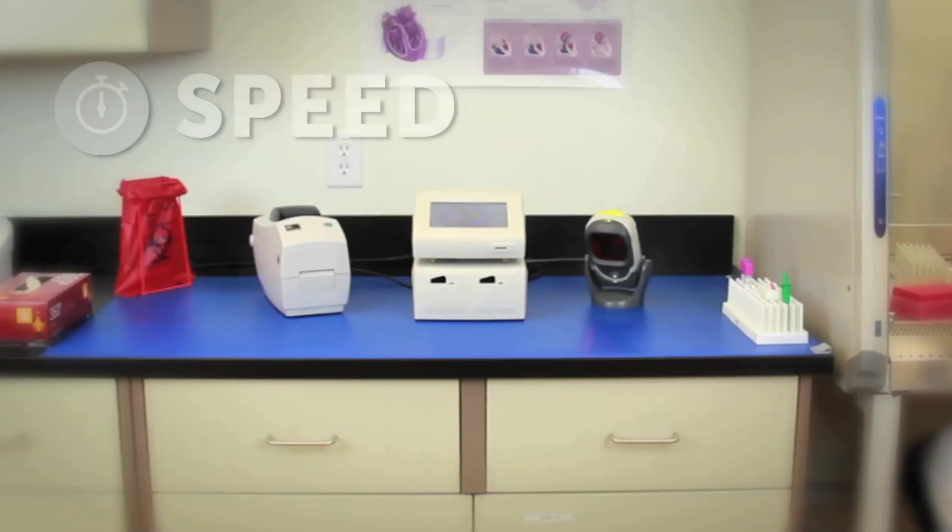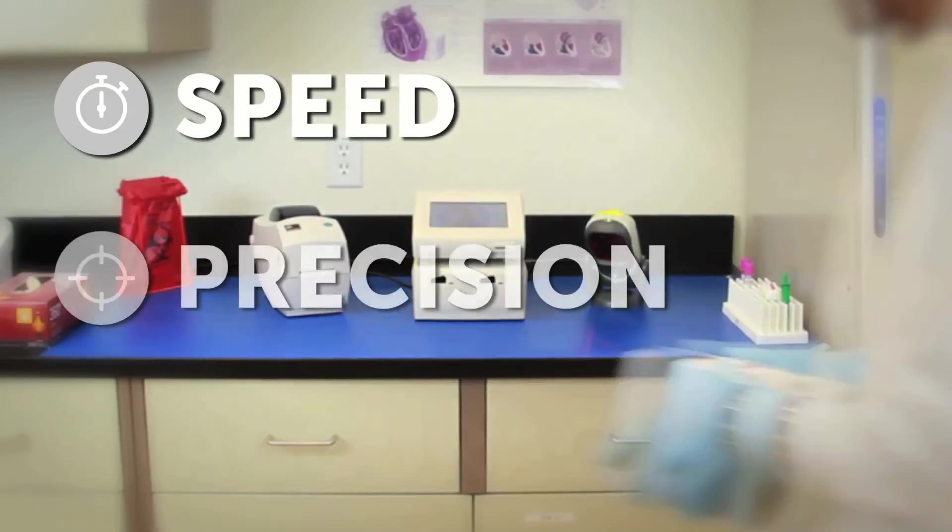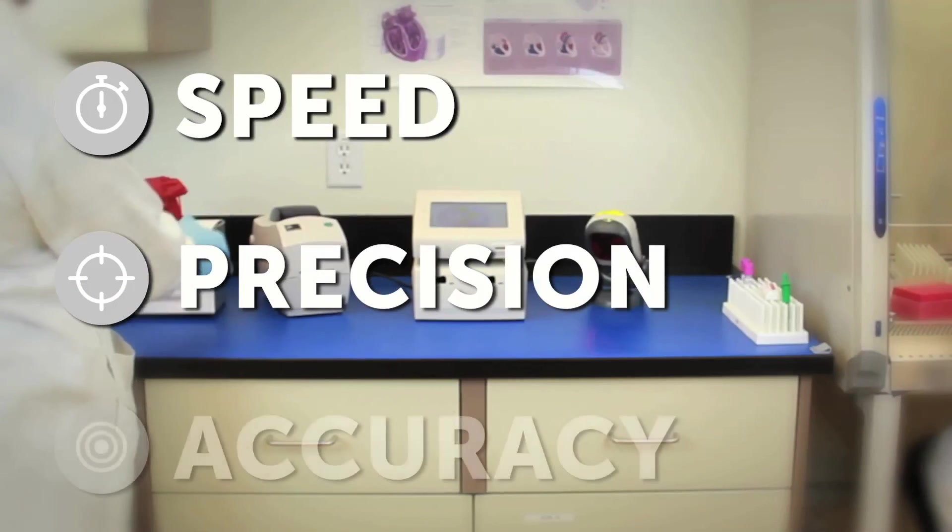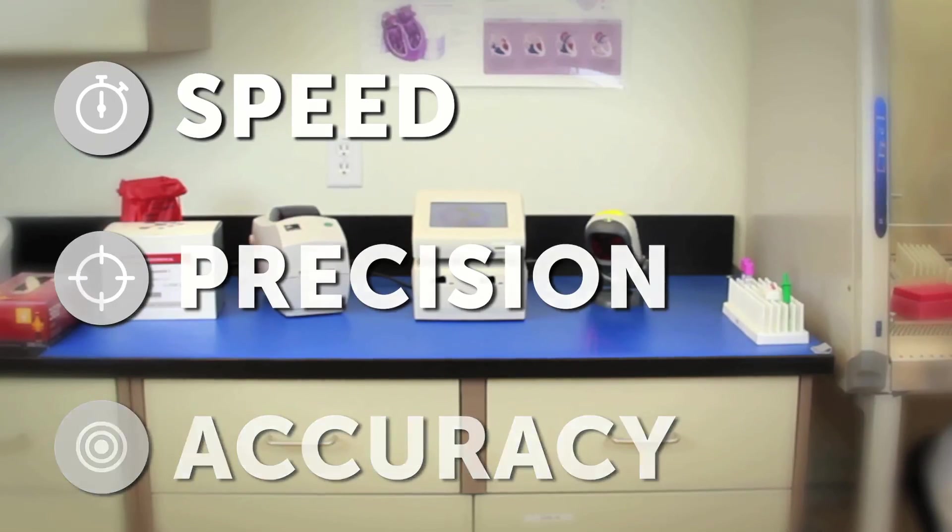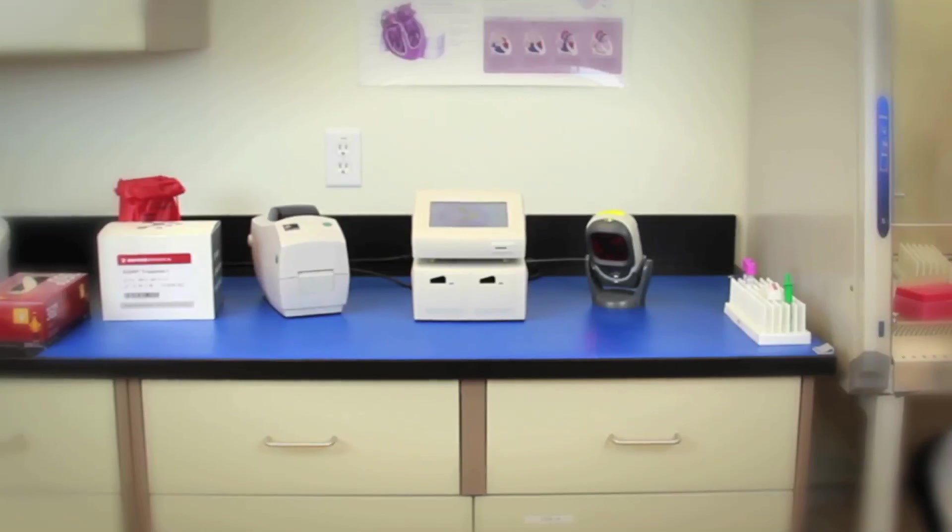In summary, the RAMP 200 is a rapid, easy-to-use reader with excellent compliance and quality features. Through its modular, flexible design, the reader can be configured to meet any laboratory's needs.